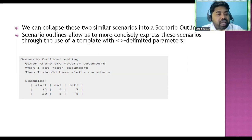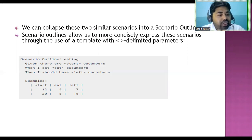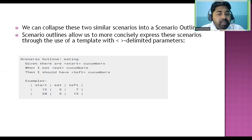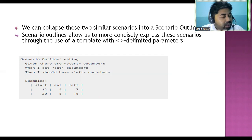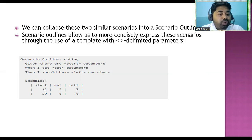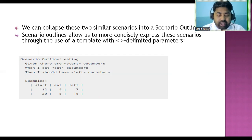Scenario outline allows us to more concisely express the scenario through the use of a template with angle bracket and pipe symbol delimited parameters. We use angle brackets and pipe symbols to pass dynamic data, and you can pass any data and execute any number of times.